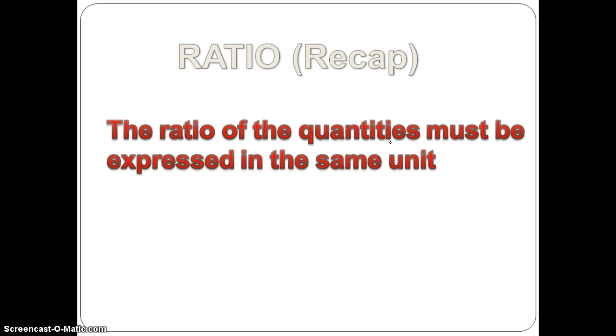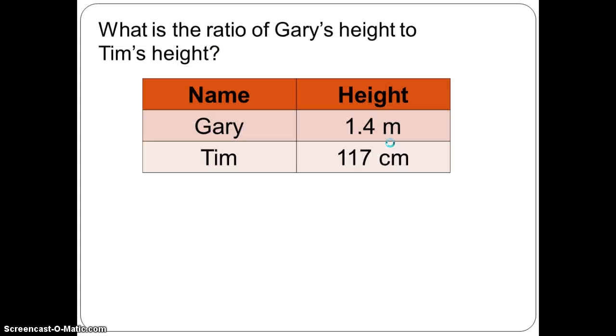The ratio of the quantities must be expressed in the same unit. We have two boys Gary and Tim. Gary's height is 1.4 meter. Tim's height is 117 centimeter. What is the ratio of Gary's height to Tim's height?